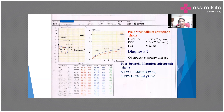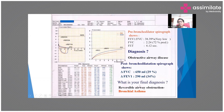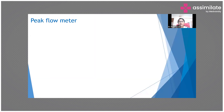The curve is still obstructive — that doesn't change with a bronchodilator response. But after the bronchodilator response, we can make a more specific diagnosis: asthma, because there is reversible airway obstruction. This is why bronchodilator response testing is so important.